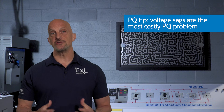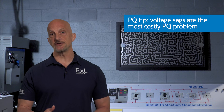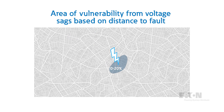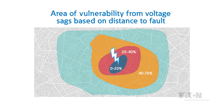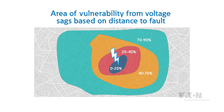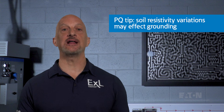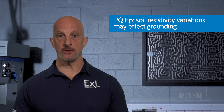Voltage sags are generally the most problematic and costly source of power quality problems because they affect an entire facility. Voltage sags are typically the result of faults on the utility grid and are caused by uncontrollable problems, including animal faults, tree contact, lightning, and dig-ins on underground cables. Soil resistivity is highly dependent on the water content of the soil.